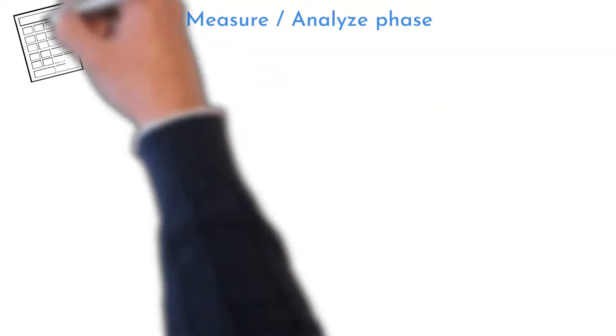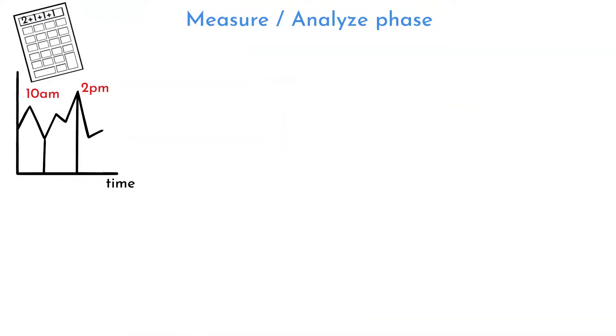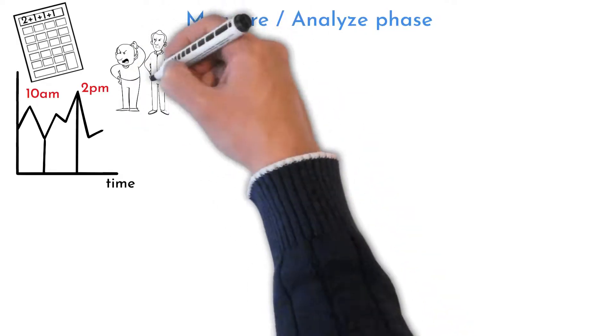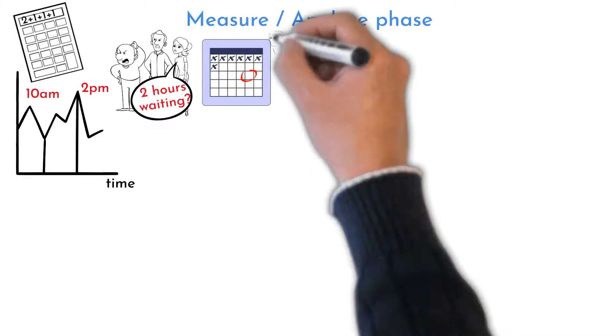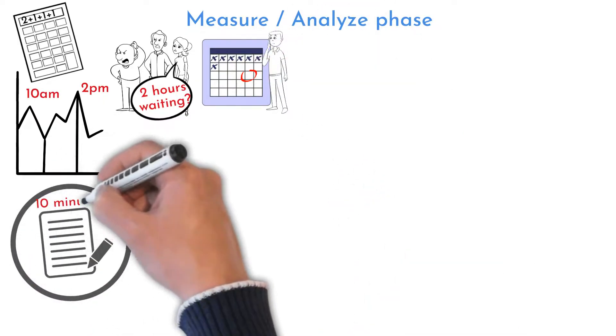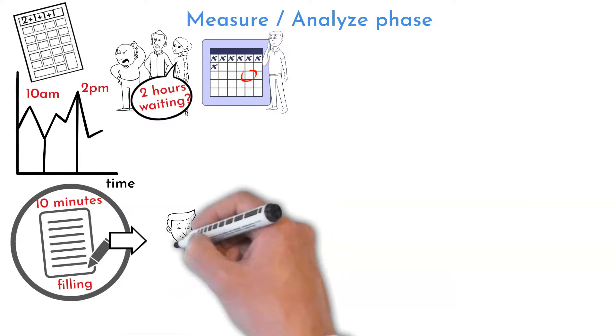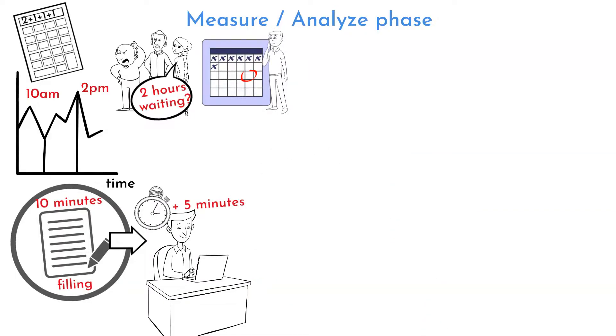Detailed measuring showed that there are waves of patients coming to hospital. The biggest wave is from 10 a.m. to 2 p.m. Patients are usually waiting two hours on average. There is one hour waiting time at the stay termination. 10 minutes each patient is spending on filling incoming paper documentation. Information must be rewritten to electronic form afterwards. It takes five minutes to rewrite it to the computer.